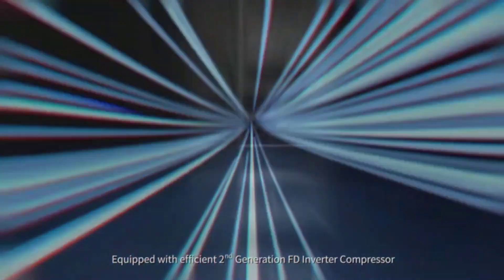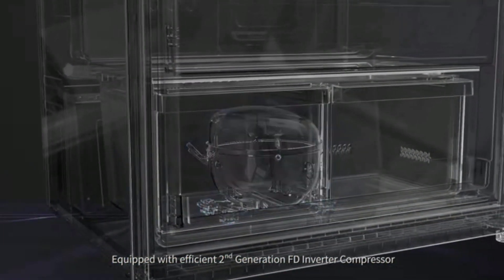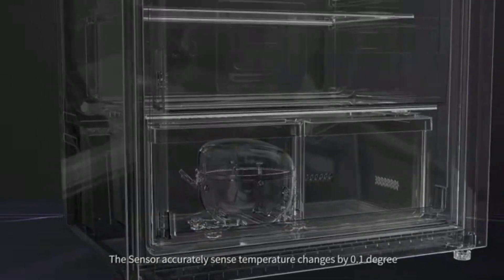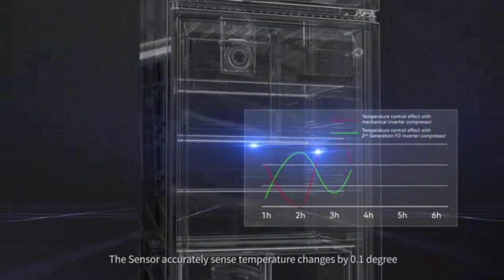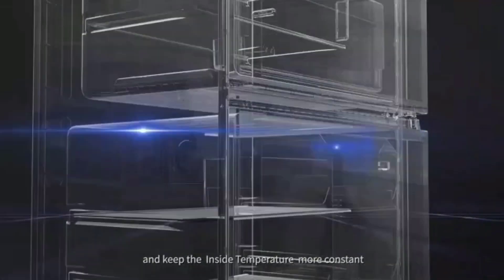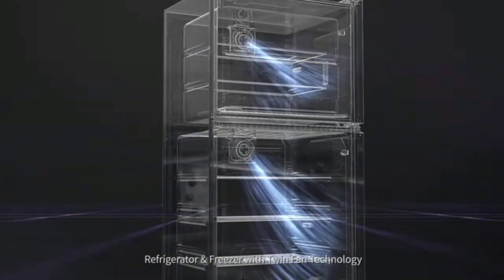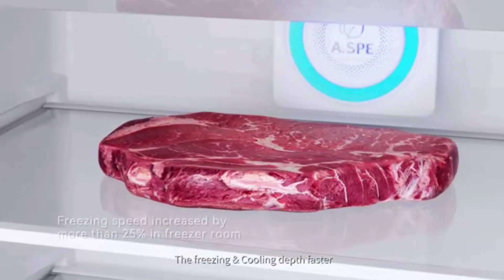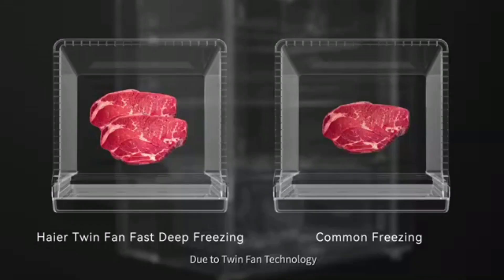Equipped with efficient second generation FD Inverter Compressor. The sensor accurately senses temperature change by 0.1 degree and keeps the inside temperature more constant. Refrigerator and Freezer Twin Fan Technology provides faster freezing and cooling depth due to Twin Fan Technology.